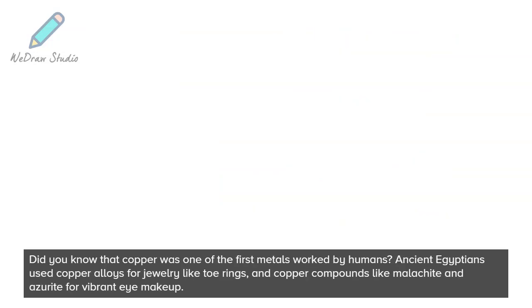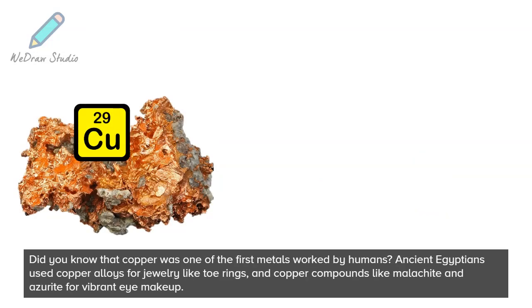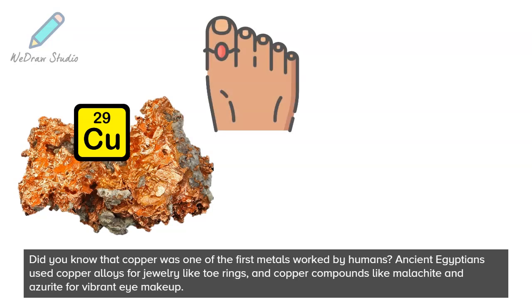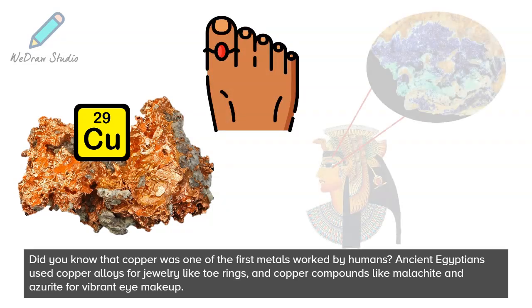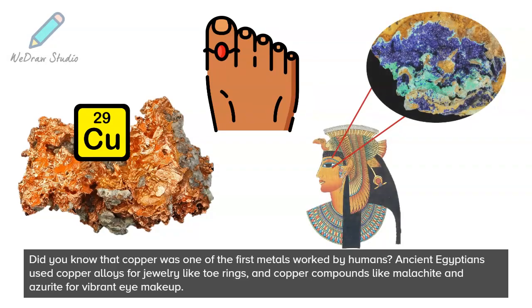Did you know that copper was one of the first metals worked by humans? Ancient Egyptians used copper alloys for jewelry like toe rings, and copper compounds like malachite and azurite for vibrant eye makeup.